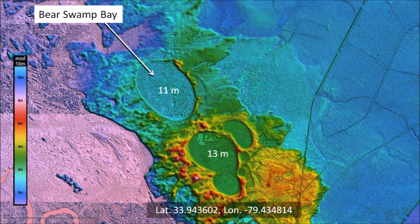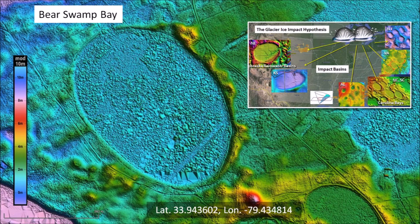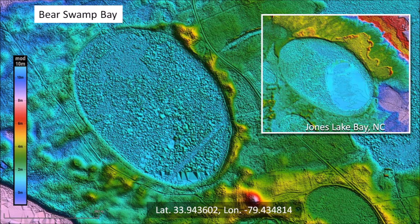Bear Swamp Bay is at an elevation of 11 meters above sea level and there is a group of overlapping Carolina Bays with well-defined rims to the southeast on terrain at 13 meters above sea level. The order in which these Carolina Bays were created can be deduced from the way in which the bays overlap using the law of superposition. The Glacier Ice Impact Hypothesis proposes that one or more extraterrestrial impacts on the Laurentide Ice Sheet ejected pieces of ice in ballistic trajectories. The east side of Bear Swamp Bay has evidence of splash zones, which are characteristic of bays formed by impacts on rivers or lakes.